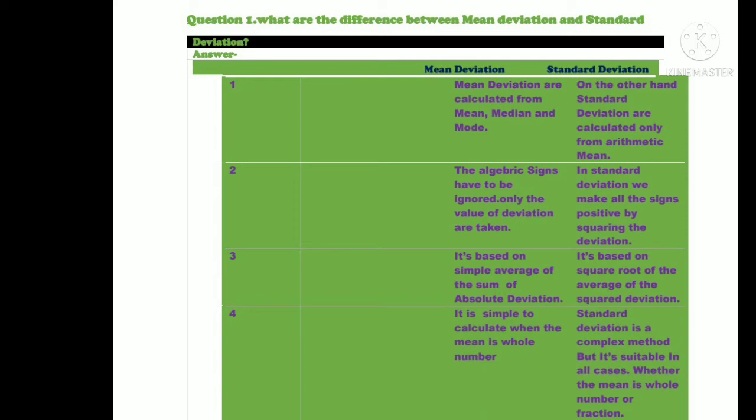Third, mean deviation is based on the simple average of the sum of absolute deviations. Standard deviation is based on the square root of the average of squared deviations.